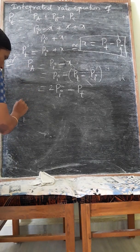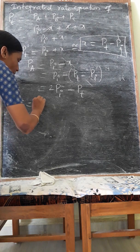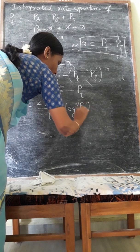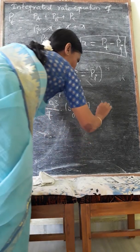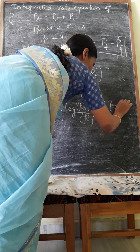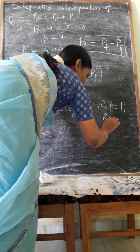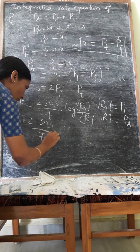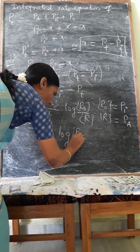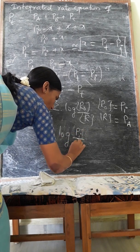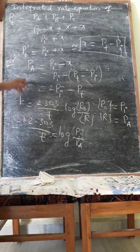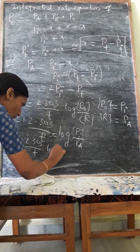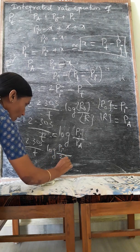Using the first-order rate equation K equals 2.303 divided by T, log(R₀ divided by R): here R₀ is PI and R is PA. Substituting, K equals 2.303 divided by T, log(PI divided by PA), where PA equals 2PI minus PT. Therefore K equals 2.303 divided by T, log(PI divided by (2PI minus PT)).